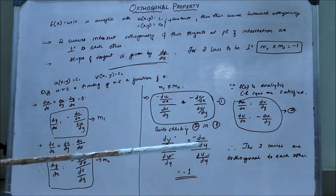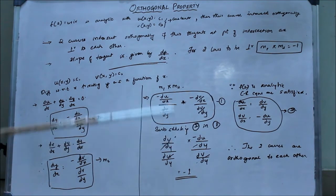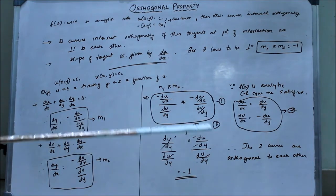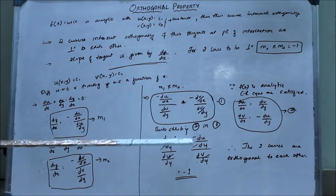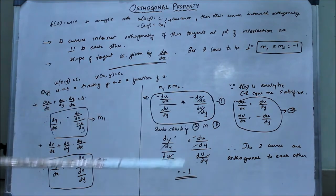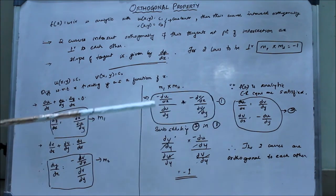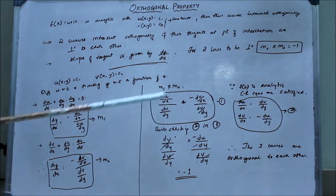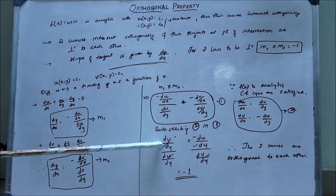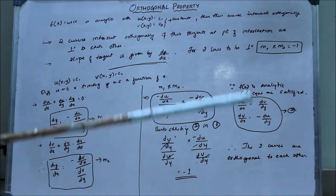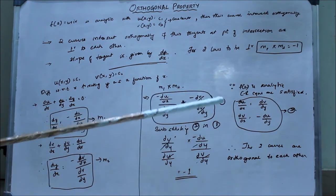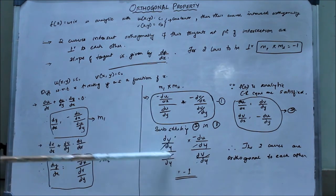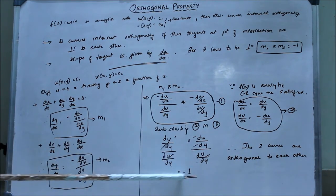Substitute for du/dx and dv/dx. When we substitute, du/dx is dv/dy, which comes here. The negatives cancel, so you get dv/dy here. For dv/dx, substitute negative of du/dy. You cancel all this and we are left with minus 1.